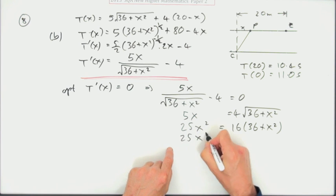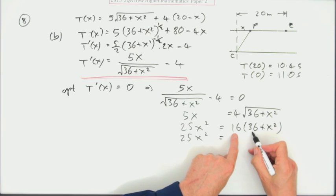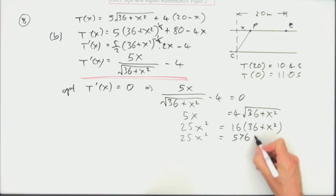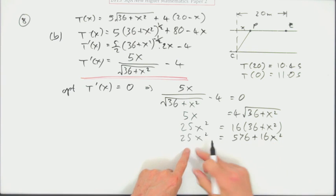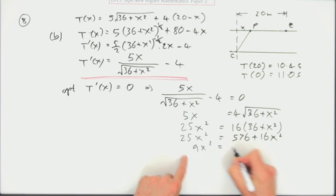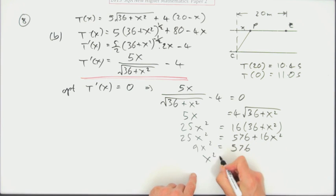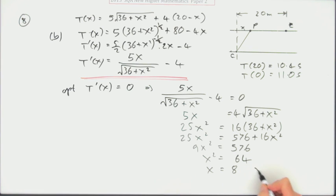You've got 25x squared equals 16 times 36 is 576 plus 16x squared. Almost there. Bring that over, 9x squared equals 576. Divide by 9, that's 64. You've got the square root of that, x equals 8, because x is positive.